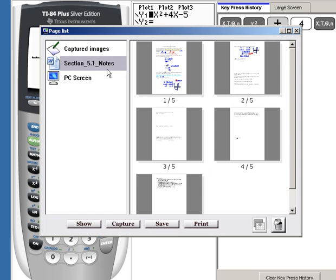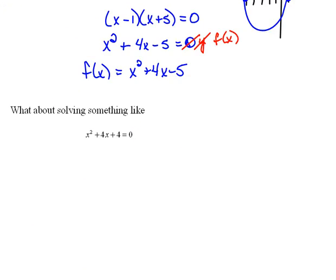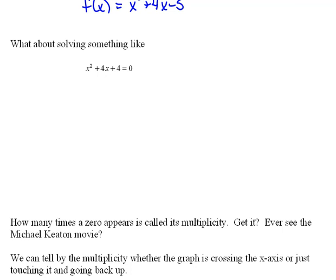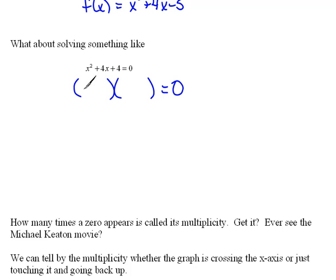Let's look at another one. Here we have x-squared plus 4x plus 4 equals 0. This was a f(x) or y value — we've replaced it with 0 so that we can find the solution, which is the same thing as finding the x-intercept or the zero. Because this is quadratic, we should be thinking about factoring. If I factor this, x-squared will factor into x times x. 4 would have to be 1 times 4 or 2 times 2 — so 2 and 2 would come together in the middle to give us the 4x, if they were both positive.